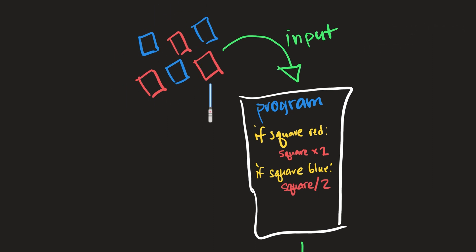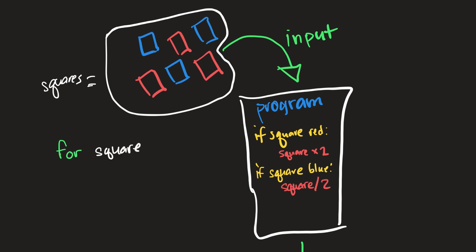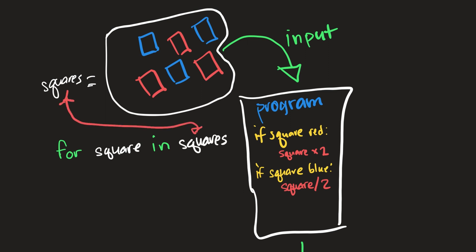The way a loop works is: let's consider all of these squares as one group. We'll circle them to emphasize they're a group and name that group 'squares.' Now we can reference this entire group using just one name — squares — and we want to do something for each one of these squares. That would look something like: for square in squares — where 'square' is an individual square and 'squares' is the group — and under that is where we specify what to do.